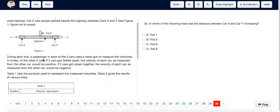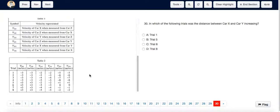For question 30, the description of the experiment says if two cars got further apart, the velocity of each car as measured from the other car would be positive. So we have to measure the distance between car X and car Y. We need to measure the velocity of car X when measured from car Y, which is represented by VXY. This is the column for VXY, and we can see that the only positive value occurs in trial 5.